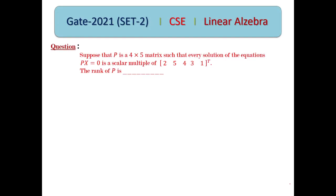The question is: suppose that P is a 4 by 4 matrix — actually it is a 4 by 5 matrix — such that every solution of the system of homogeneous equations P·x = 0 is a scalar multiple of a given vector. What is the rank of P?